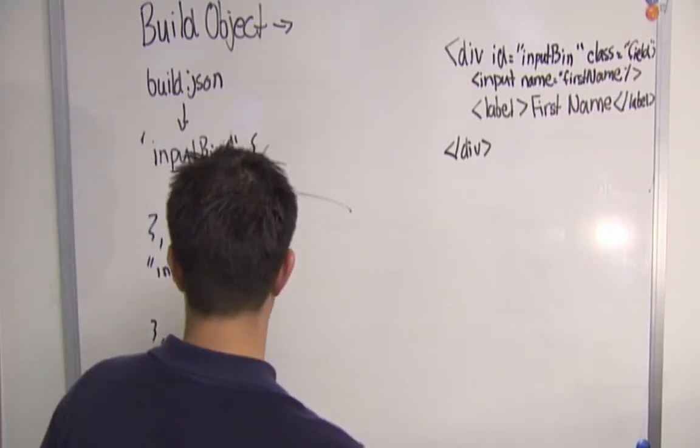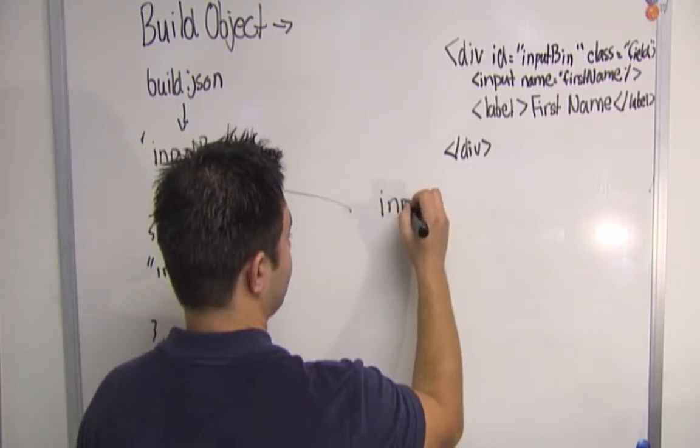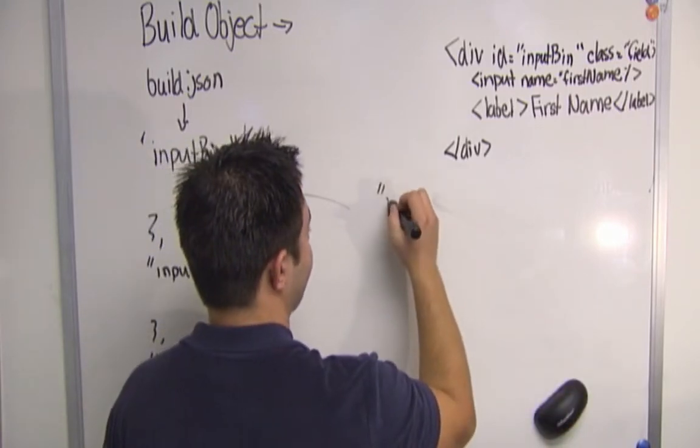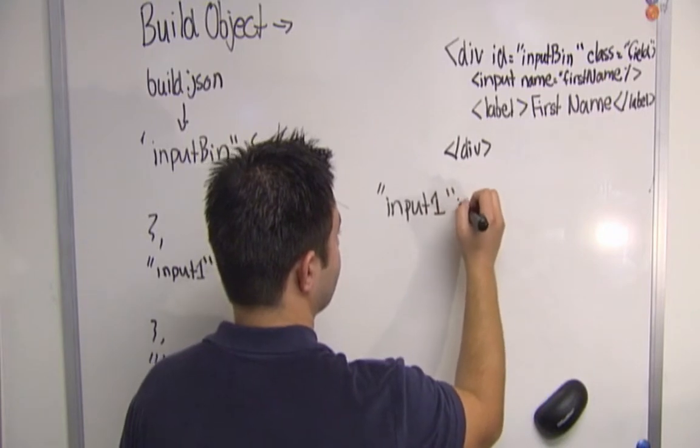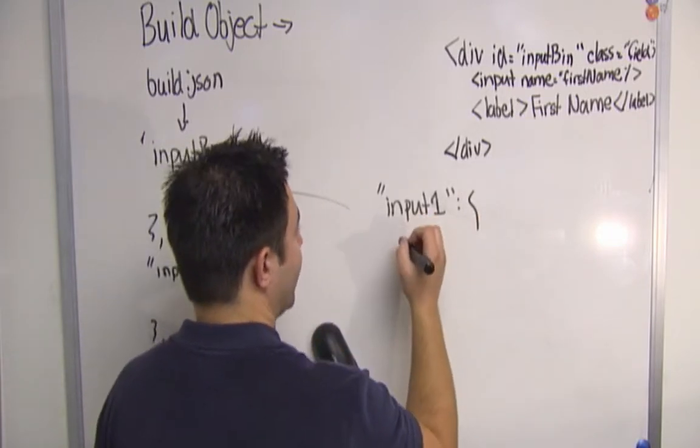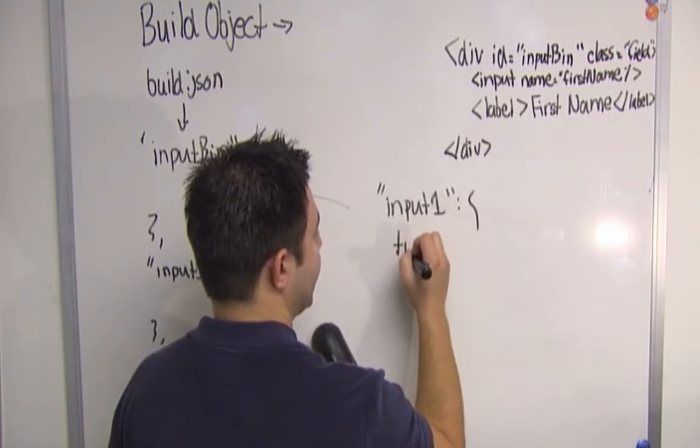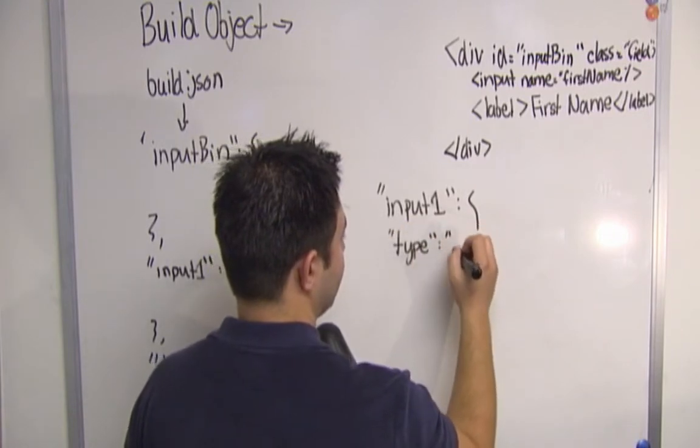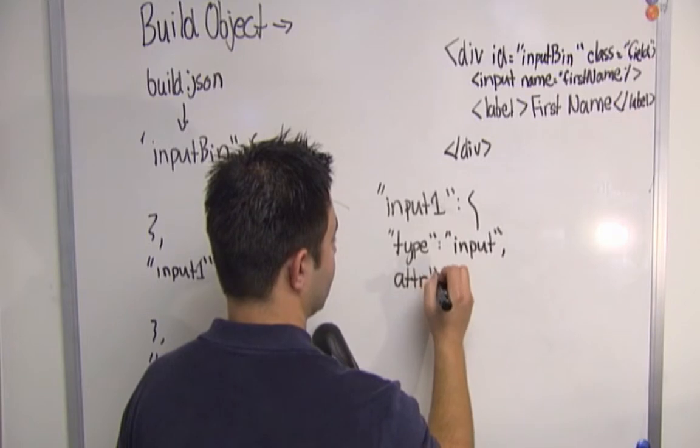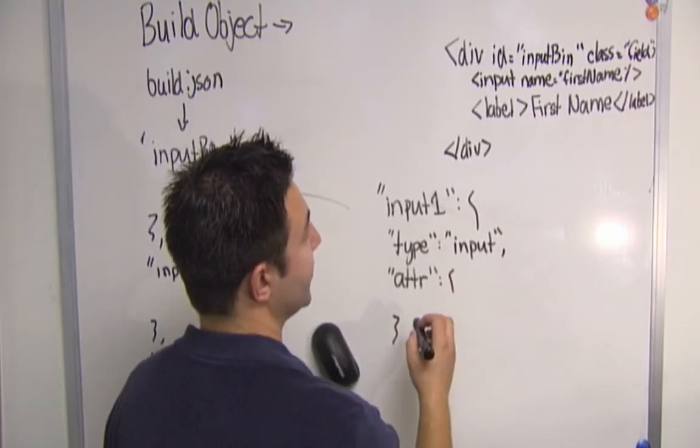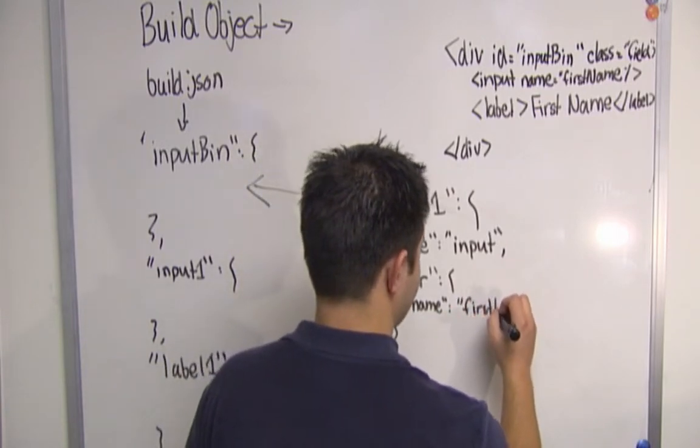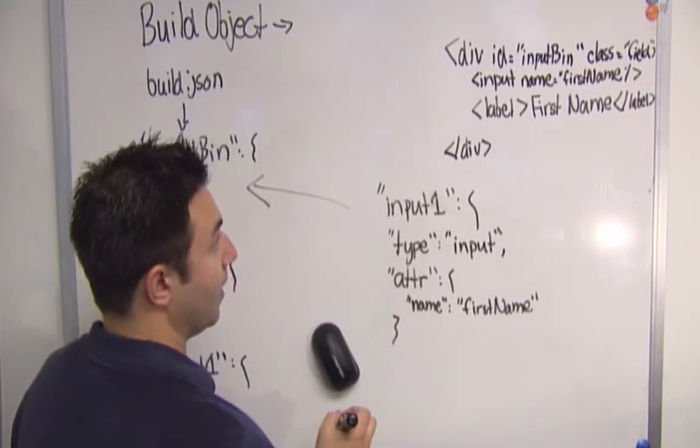So that's input bin. Let's do input one. Let's see what input one looks like since this one's going to change the type. This is just this build object right here. So there's only one of them, so quantity defaults to one. Type, though, is not a div. We need to specify input. So we're going to say type input. And then we have a name of first name. So attributes, it's just a simple object where name is the property name or the key, and first name is the value. And that's it.